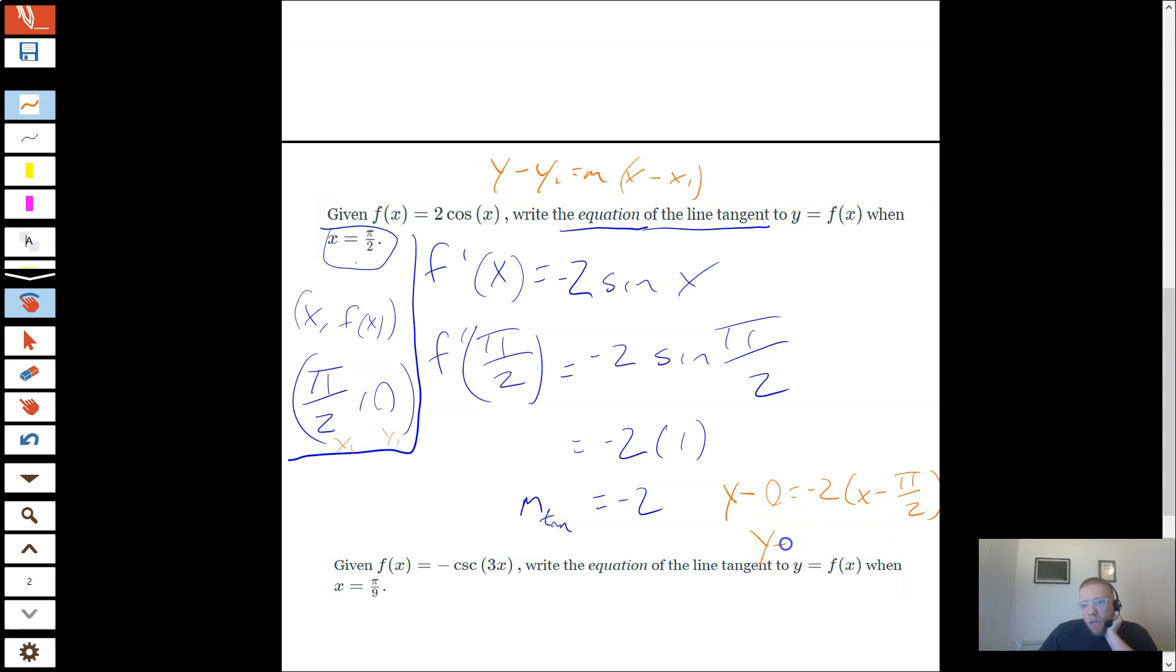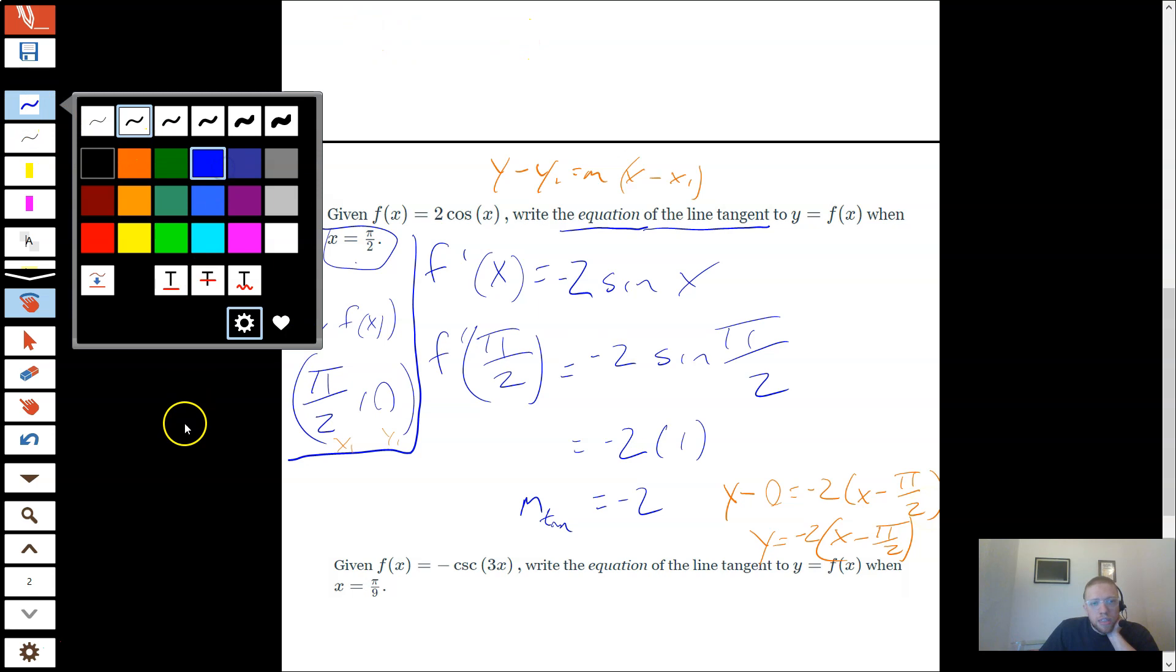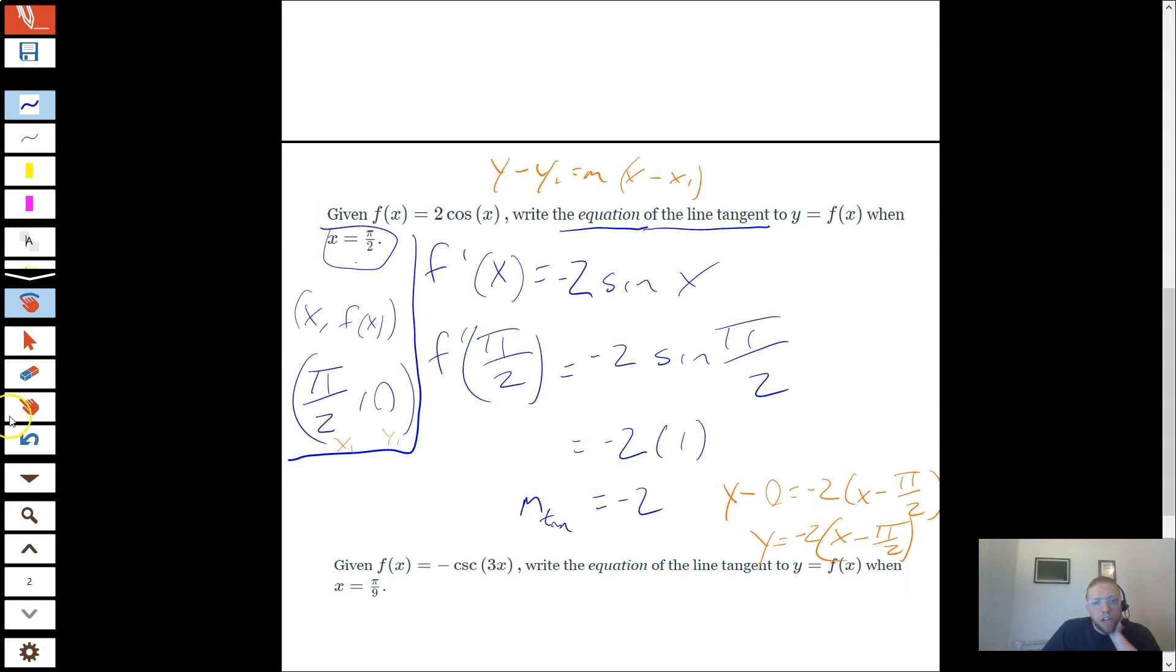You can get rid of the 0 if you wanted. And I could obviously distribute. But this is a fine way to write down a line. Super convenient for writing down tangent lines. So there's our first example. Our next one's a little bit scarier.